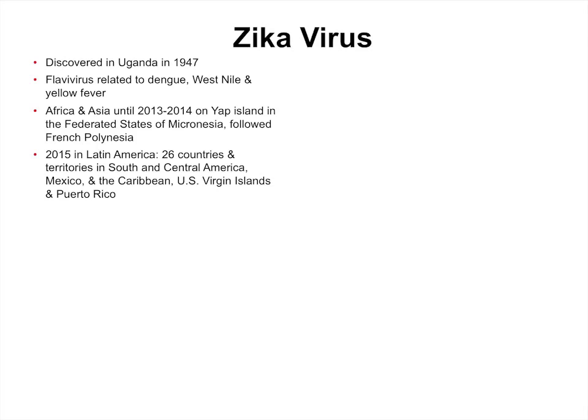In South and Central America, Mexico, the Caribbean, the Virgin Islands, and Puerto Rico — a U.S. territory — it is a significant problem right now. For the people who do get sick — and most don't, 80% don't — it's a fever, a rash, joint pains, and pain in the eyes. The person typically doesn't get as sick as they do with dengue.